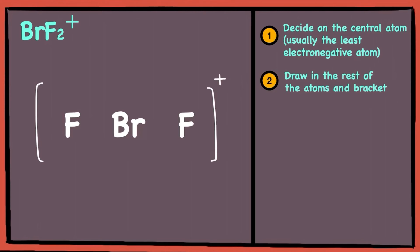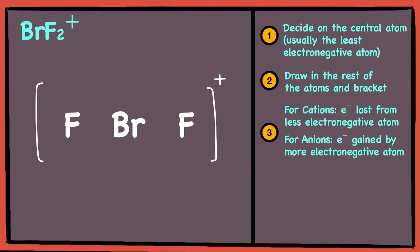Next, since it is a positive sign with a 1, it means that 1 electron is lost from the less electronegative atom, and in this case, it is the central atom bromine. So initially, bromine has 7 valence electrons, and after losing 1 electron, it will have 6 valence electrons.